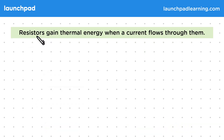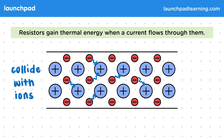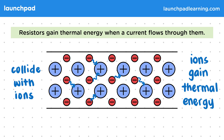Resistors gain thermal energy when a current flows through them. Remember that electric current is transferred within a wire. Electrons lose kinetic energy when they collide with ions, and they then transfer energy to them. The ions then vibrate more and gain thermal energy.